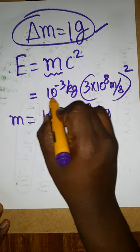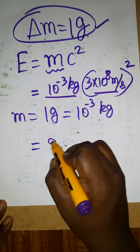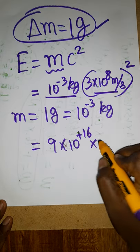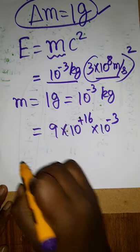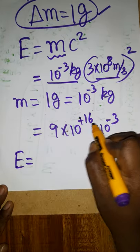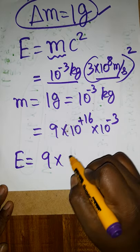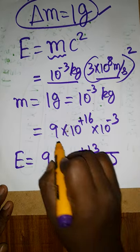If you are calculating this, multiply these together. So 9 times 10 to the power 16 times 10 to the power minus 3. So finally we will get the energy. 16 minus 3 gives us 10 to the power 13 joules as the energy.